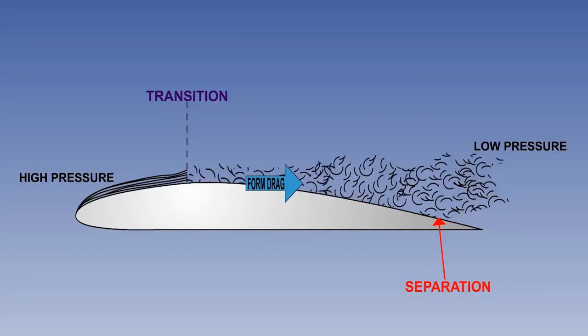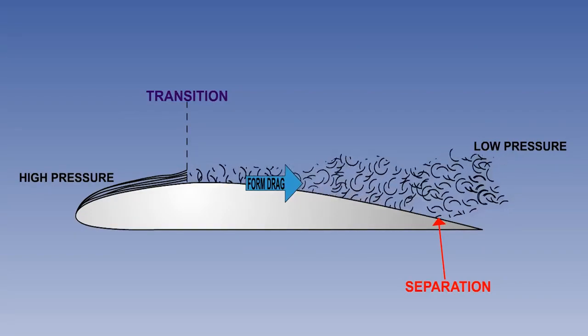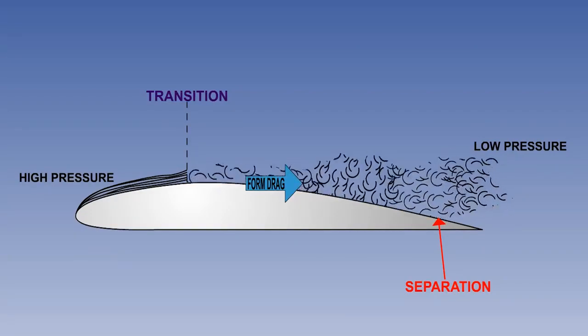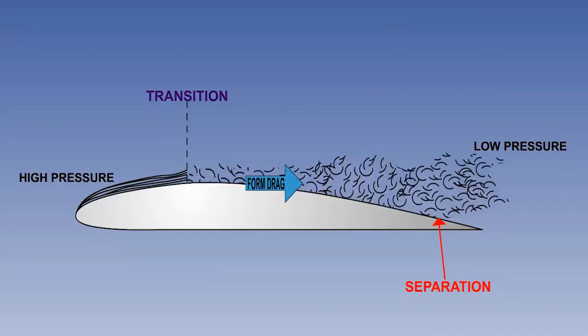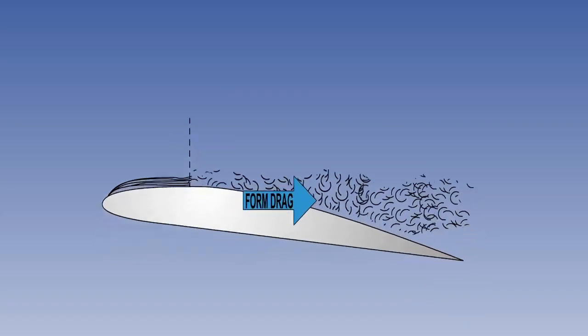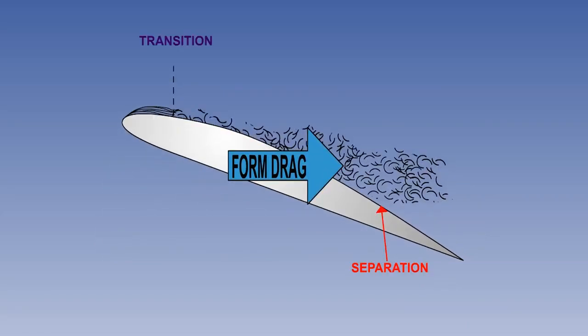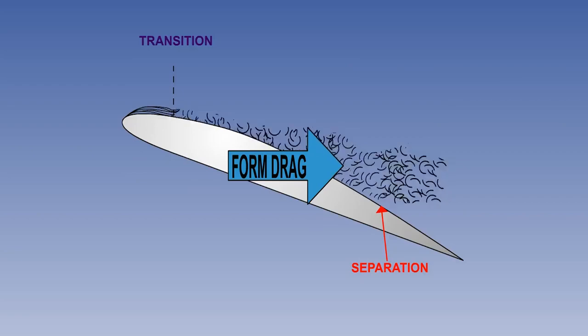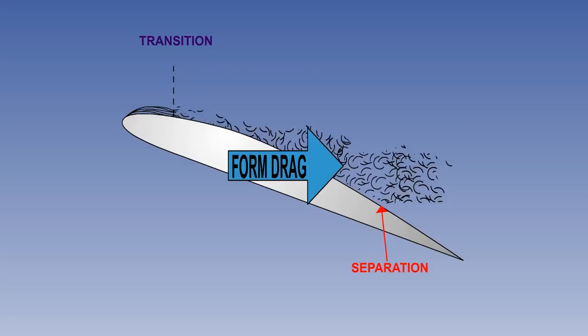The loss of the kinetic energy required to overcome the adverse pressure gradient and prevent separation of the boundary layer can be caused by various factors. As angle of attack increases, the transition point moves closer to the leading edge and the adverse pressure gradient becomes stronger.